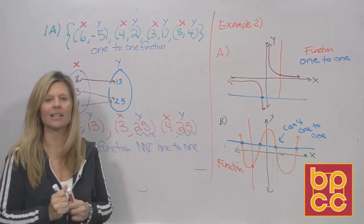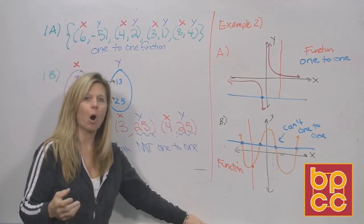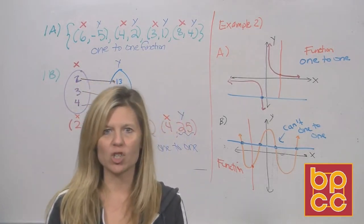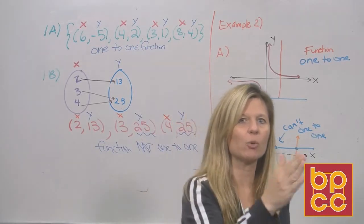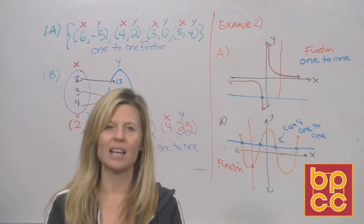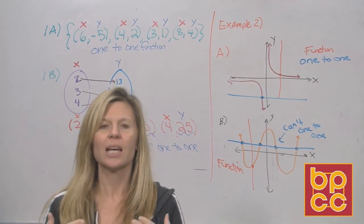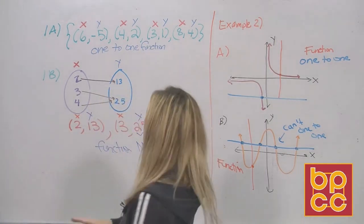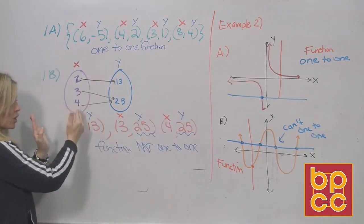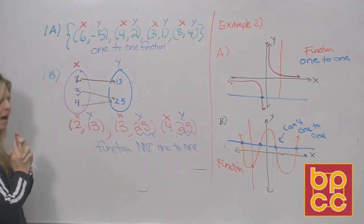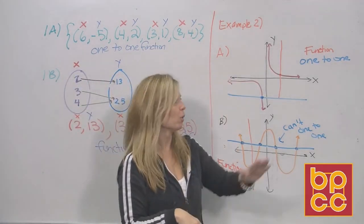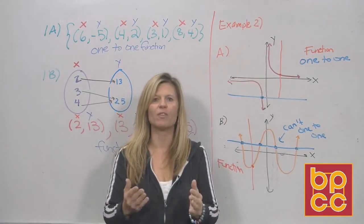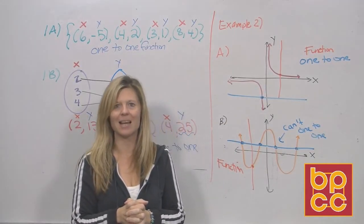Overall, what we learned today is the definition for one-to-one function. If you have a function — meaning every x value is different — then you can talk about whether that function is one-to-one, which means every y value is also different. We can look at points and check if x's and y's repeat, or look at a graph and do a vertical line test to prove it's a function and a horizontal line test to prove it's one-to-one.